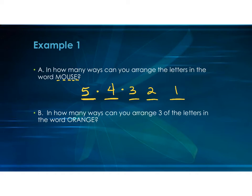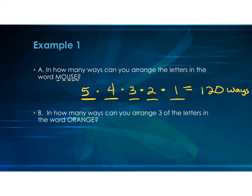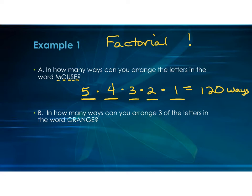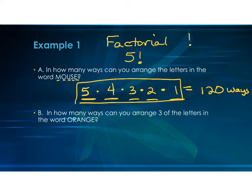Then I multiply those numbers: five times four is 20, times three is 60, times two is 120. So there are 120 ways to arrange the letters in the word MOUSE. This technique — starting at a number and counting down then multiplying — is called a factorial. When you see it on your calculator, a factorial is an exclamation point, not something used in grammar but actually used in math.